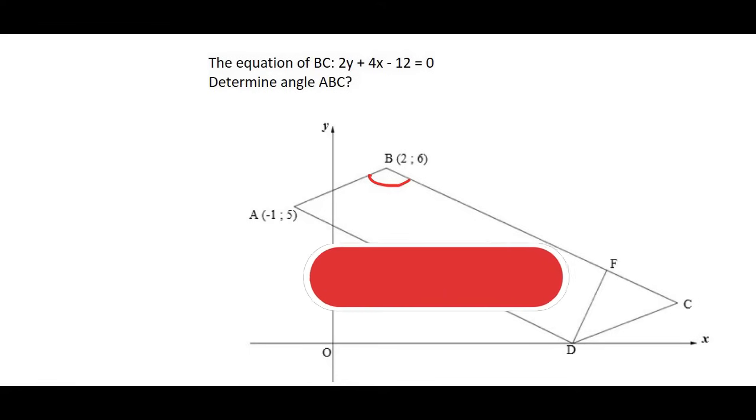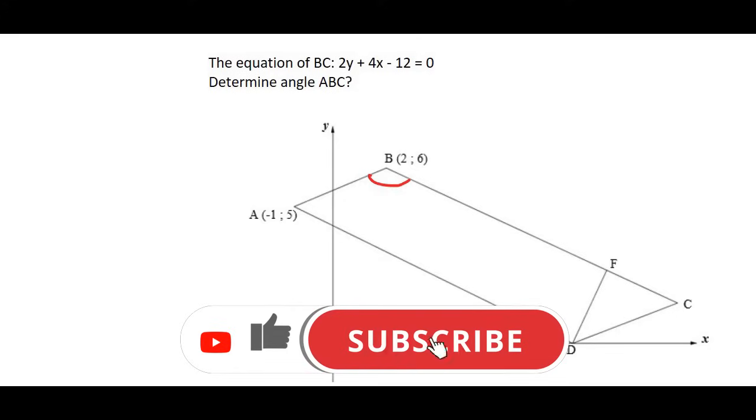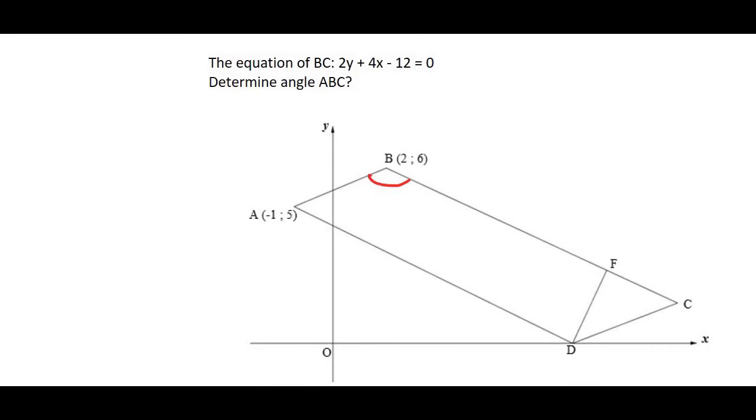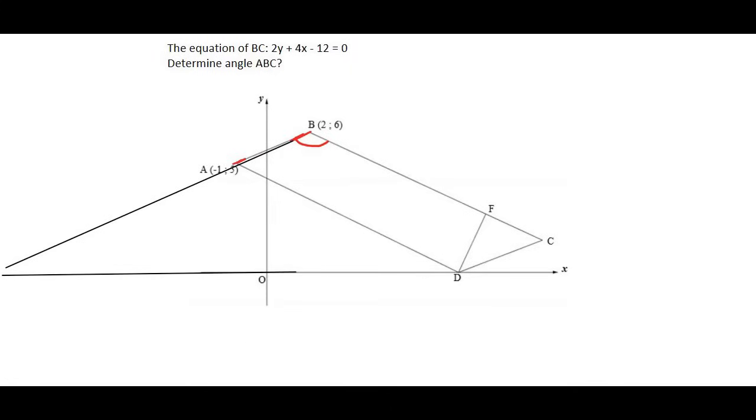We know that to work out angles in analytical geometry for grade 11, it is really useful to be able to get the gradient. Because when you have a gradient of a line, you can work out its angle of inclination. What we can do in a question like this is, we know that B to A, we can work out that one's angle of inclination. We can just imagine that the line carries on going, and you can see that these two lines would eventually meet over there. So we could work out that angle.